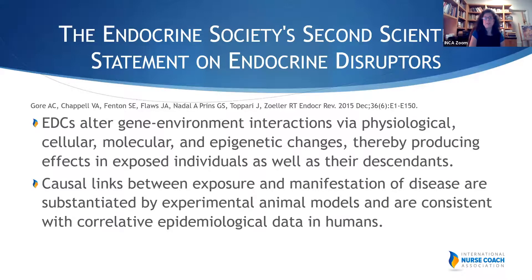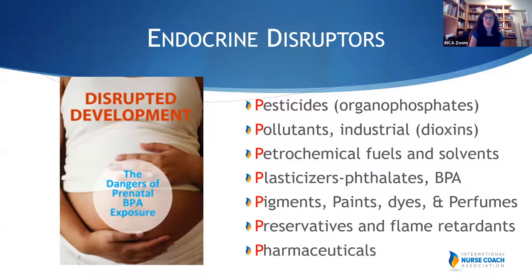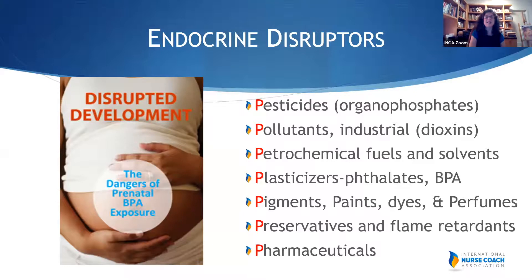Think of all the P's among endocrine disruptors: pesticides — whether organophosphates or atrazine — pollutants like dioxin, petrochemical fuels and solvents, plasticizers like phthalates and bisphenol A, pigments like paints and dyes including Red Dye #1 and Yellow Dye #3 in children's cereals and gummy bears, preservatives, flame retardants, and pharmaceuticals. All of these have the capacity to be estrogen disruptors — they are molecularly similar to estrogen, so they are taken up at estrogen receptor sites in the breast, ovaries, uterus, or testes. Many men are developing larger breasts as they age, which may reflect their chemical exposures.